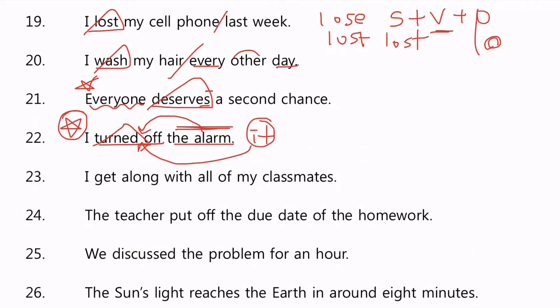두 개 다 성립하는데 대명사인 경우는 I turned it off. 이렇게 이거만 가능하다는 거. 이 부분은 꼭 알고 있으시고, 그리고 23. I get along with all of my classmates. 나는 나의 반친구 모두들과 get along with, 그래서 잘 지낸다.